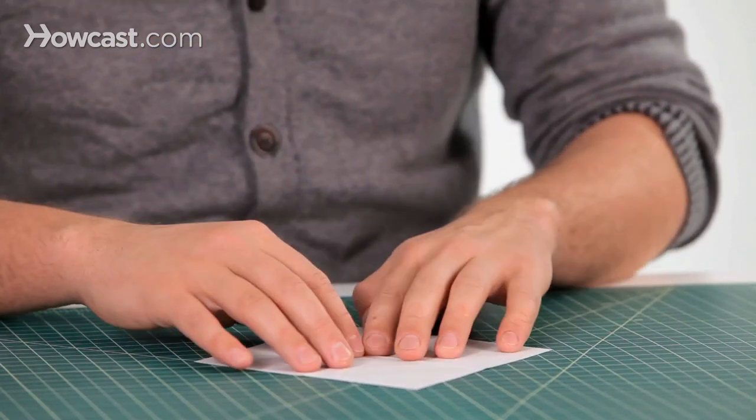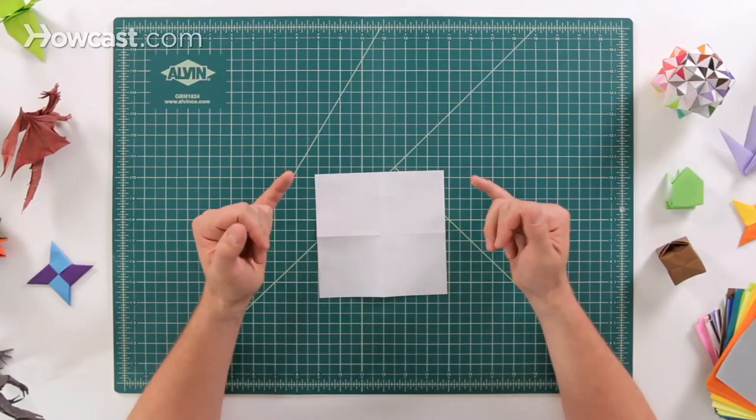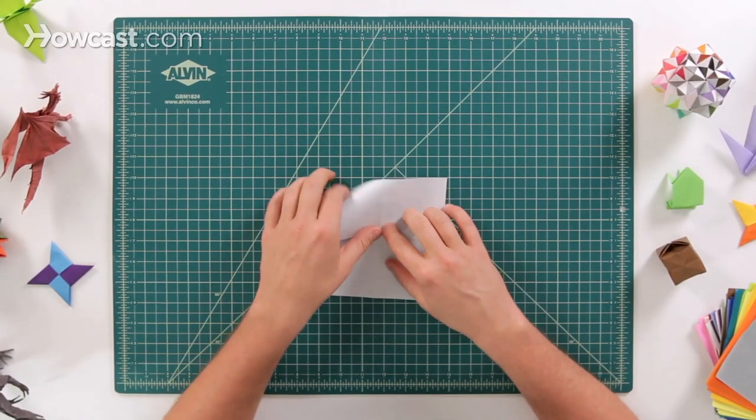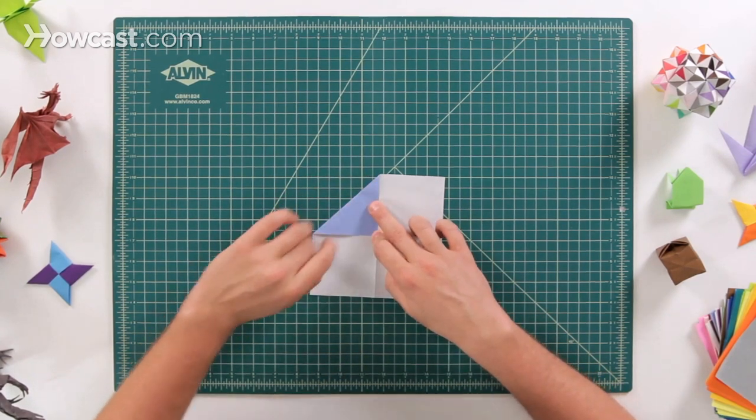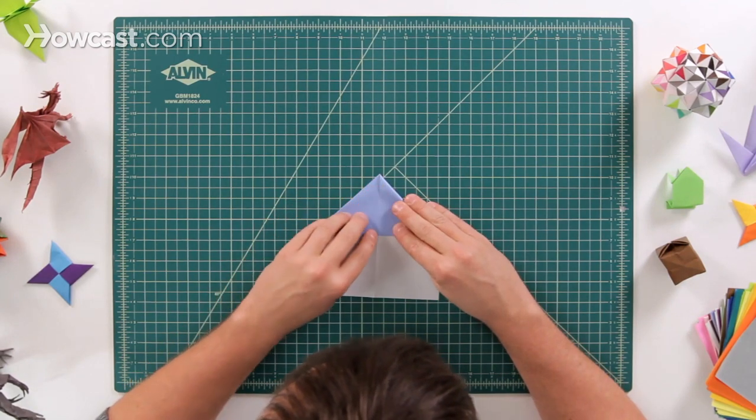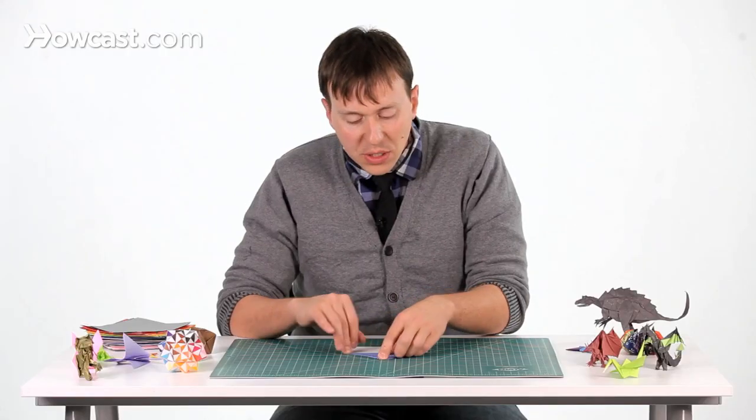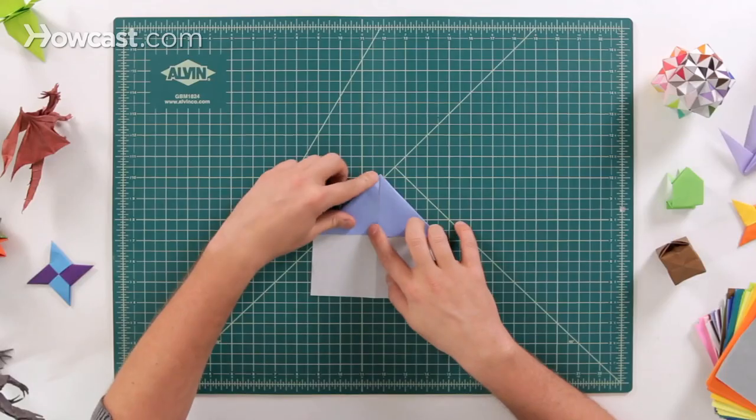Next, we're going to flip it over, looking at the white side, and we're going to fold two corners at the top. We're going to make two blintz folds where those two corners are going to come exactly into the middle of the paper. And again, you want to be nice and precise, as accurate as you can be so that they're right up next to each other, but they're not overlapping at all.